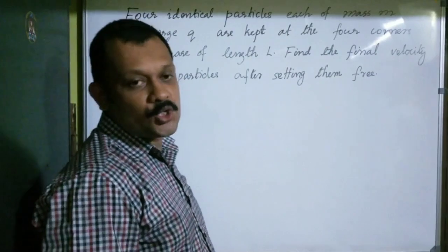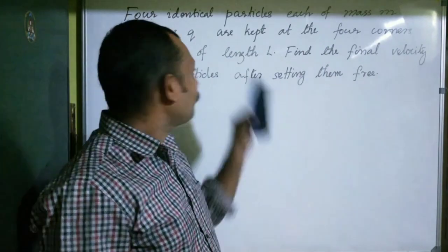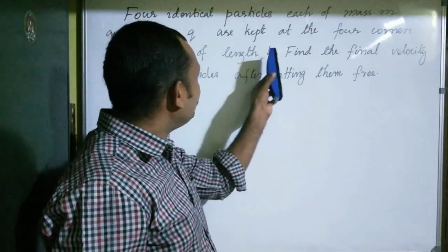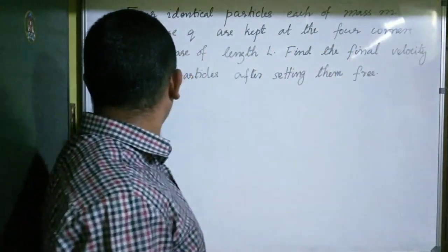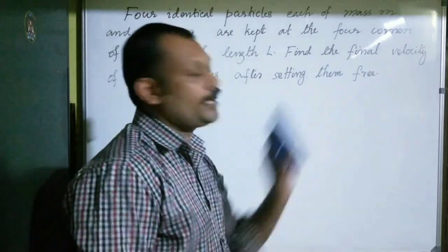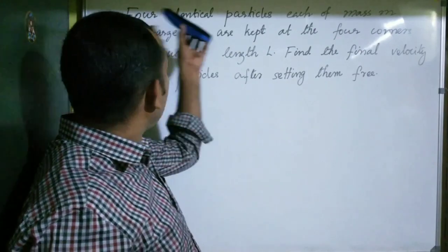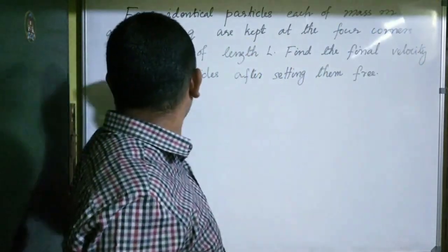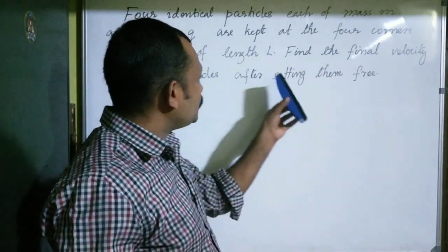Four identical particles, each of mass M and charge Q, are kept at the four corners of a square of side L. Find the final velocity of these particles after setting them free.